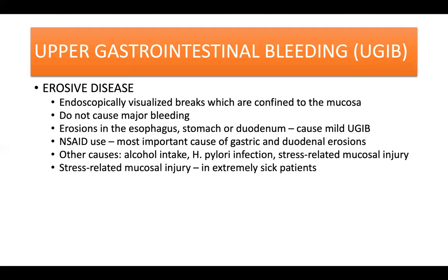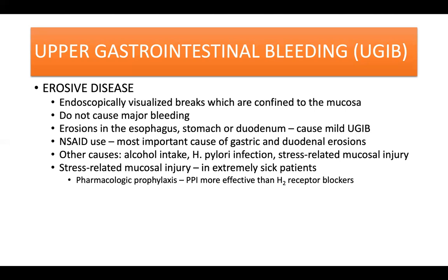Stress-related gastric mucosal injury occurs in extremely sick patients such as those who have experienced serious trauma, major surgery, burns covering more than a third of the body surface area, major intracranial disease, or severe medical illness. Pharmacologic prophylaxis with PPI may be considered in these patients. Meta-analysis of randomized trials indicate that PPIs are more effective than H2 receptor antagonists in reduction of overt and clinically important upper GI bleeding without differences in mortality or nosocomial pneumonia.